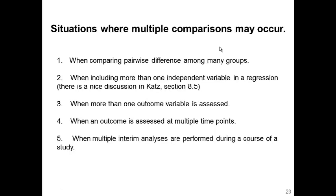Let's talk about situations where multiple comparisons may occur. Situation one is comparing among many groups using multiple pairwise comparisons. Situation two is when more than one independent variable is included in a regression — for example, assessing the effect of age, gender, BMI, smoking, and cholesterol on oxidative stress as an outcome. With five independent variables, each computes a p-value, giving you five p-values, which is applicable to the multiplicity issue.